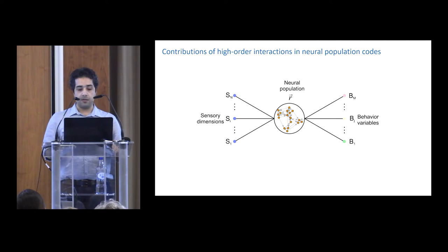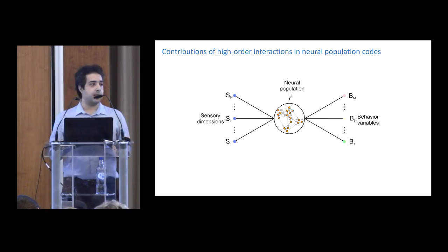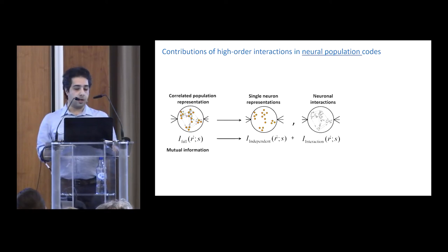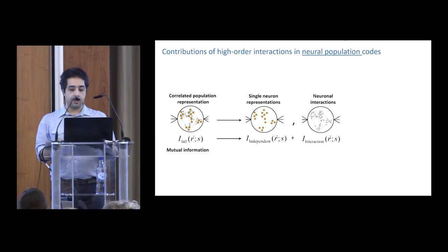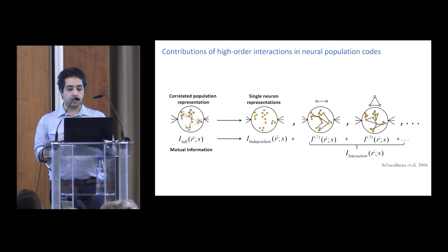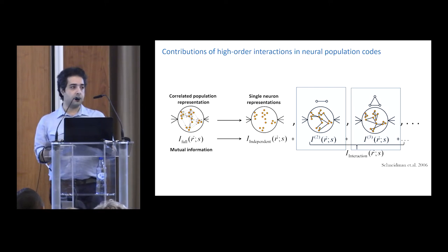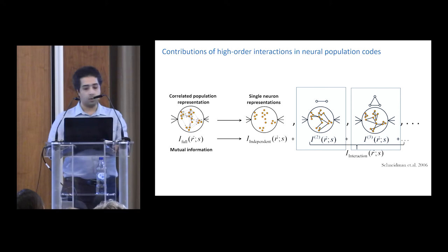Similarly, at the population level, interactions and correlations between neurons play an important role in information processing and the population code. By knowing how neurons are correlating within a population, both at the level of signal and noise components, we can not only isolate the contribution of interactions in the population information, but also break it down into individual interaction orders and motifs such as pairs, triplets, or higher-order interactions corresponding to multiple scales of connectivity in the neural circuit.